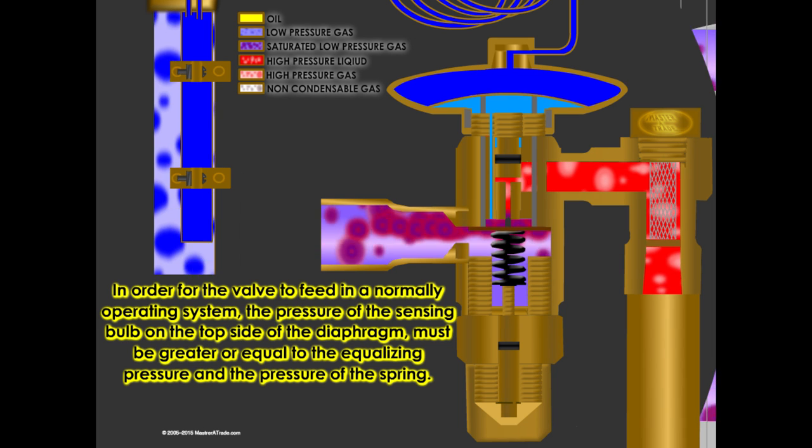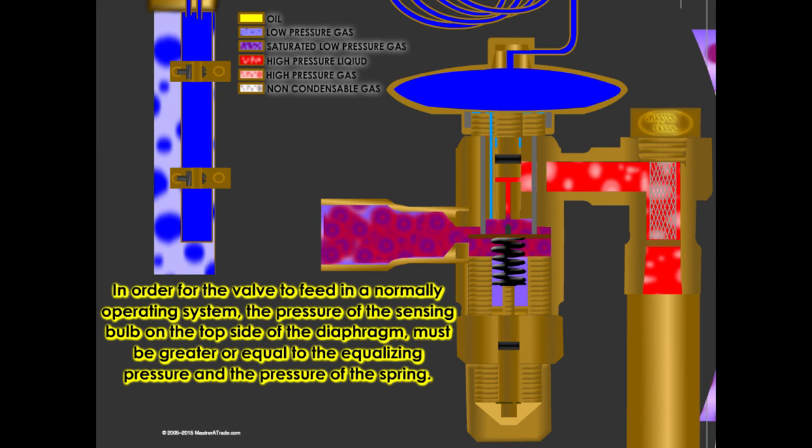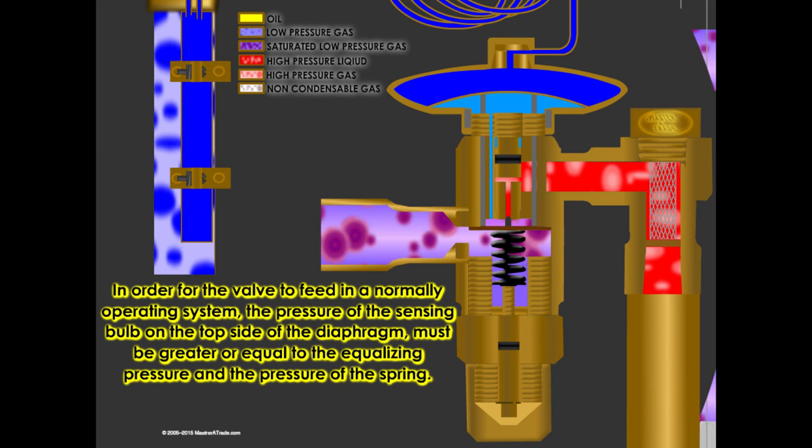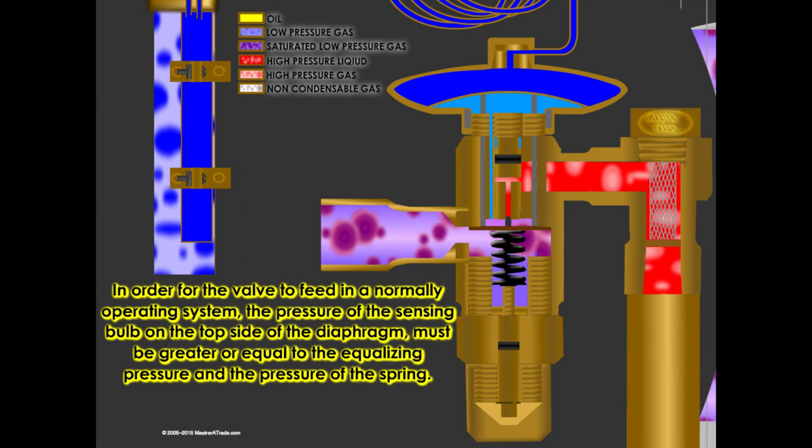In order for the valve to feed in a normally operating system, the pressure of the sensing bulb on the top side of the diaphragm must be greater or equal to the equalizing pressure and the pressure of the spring.